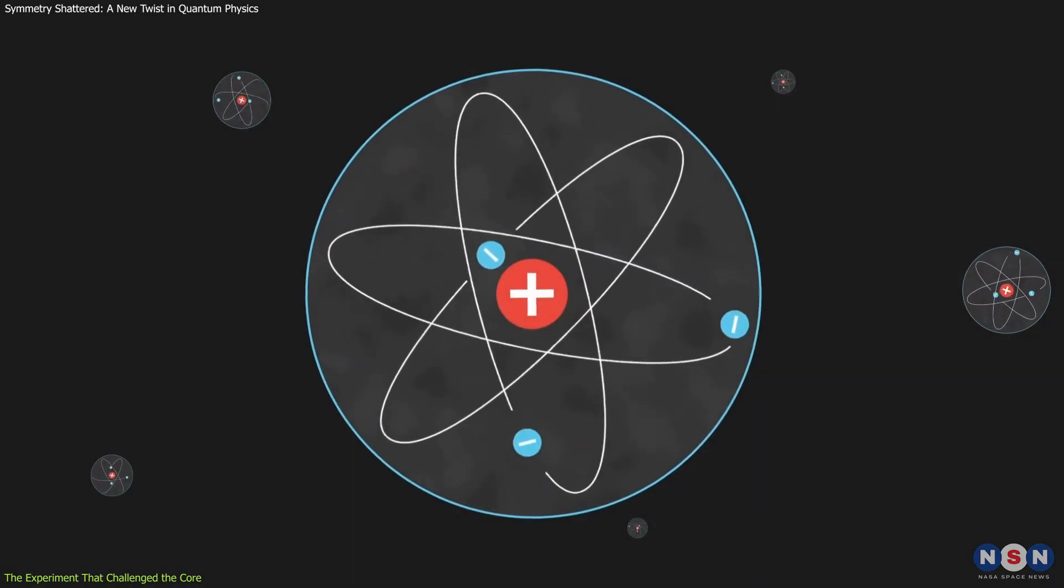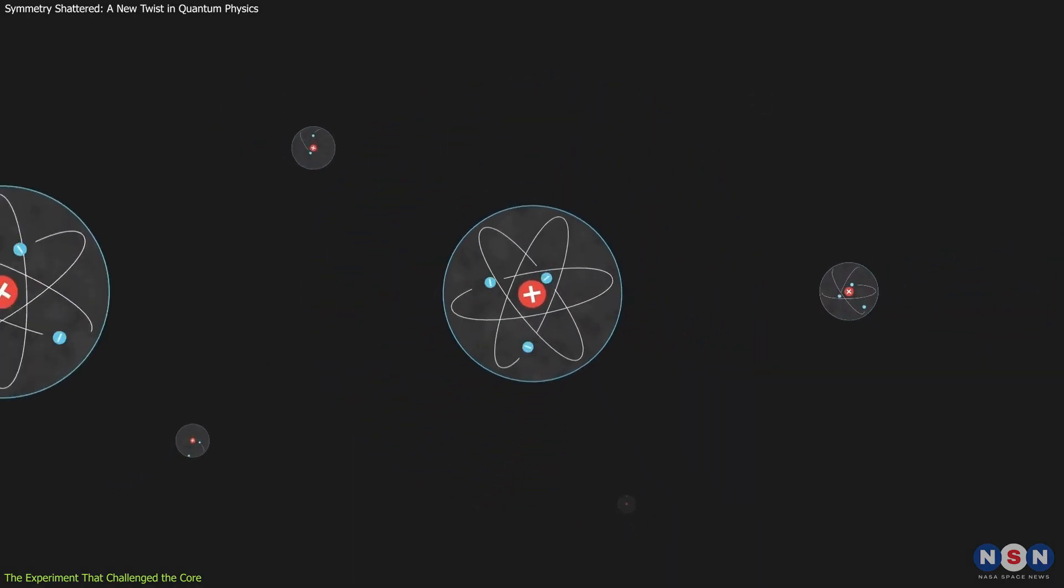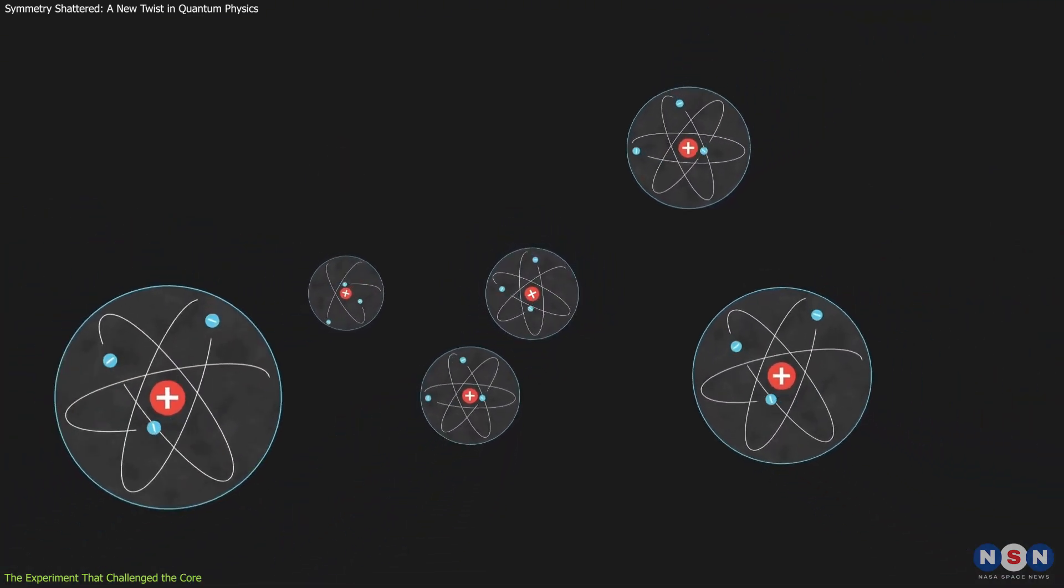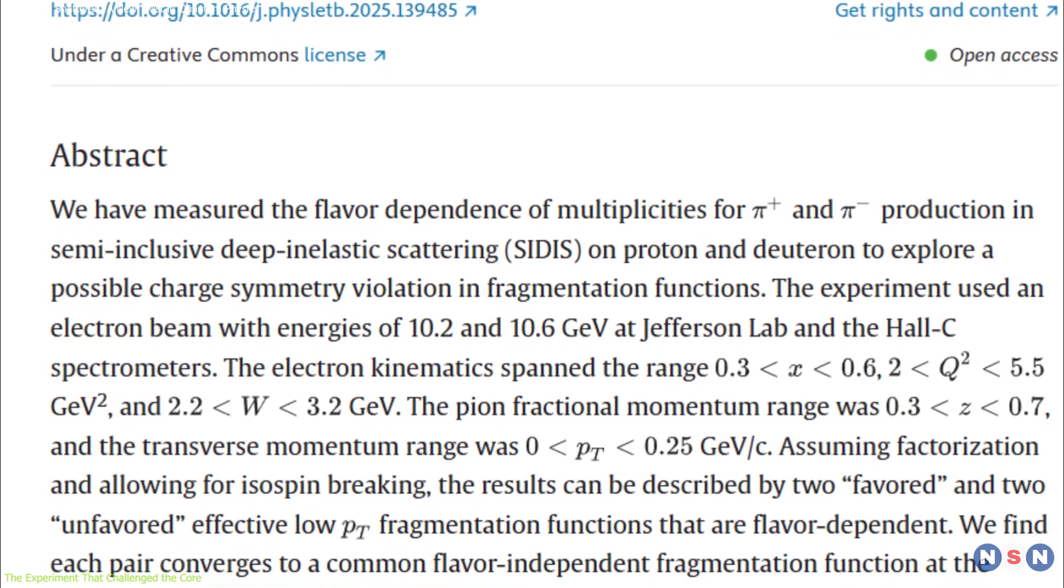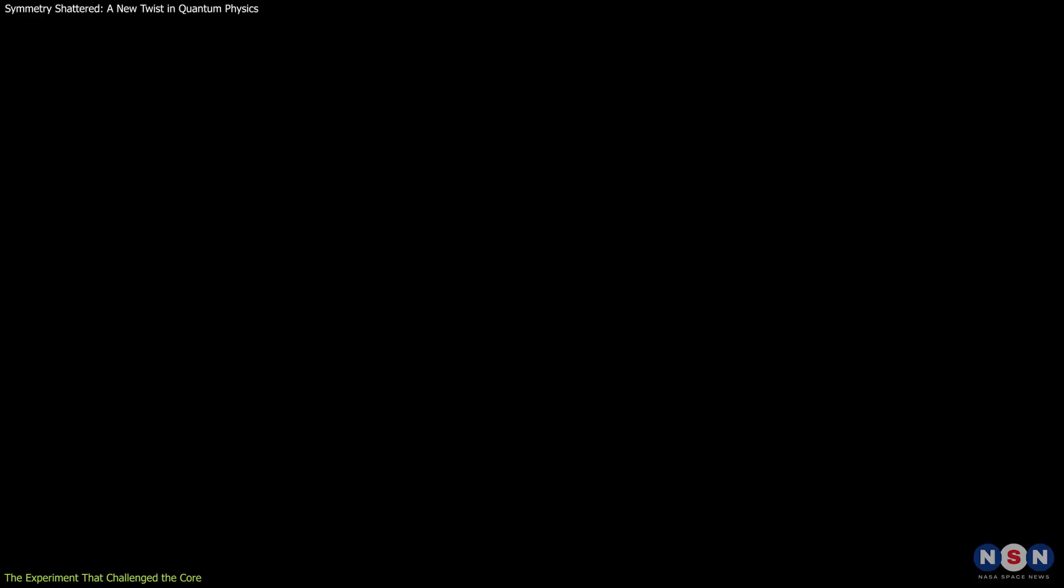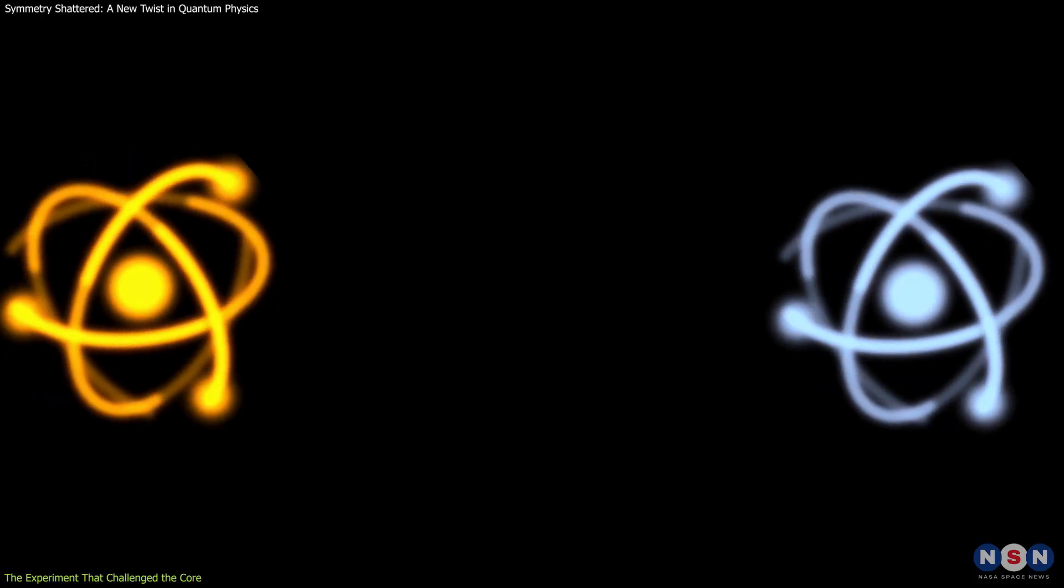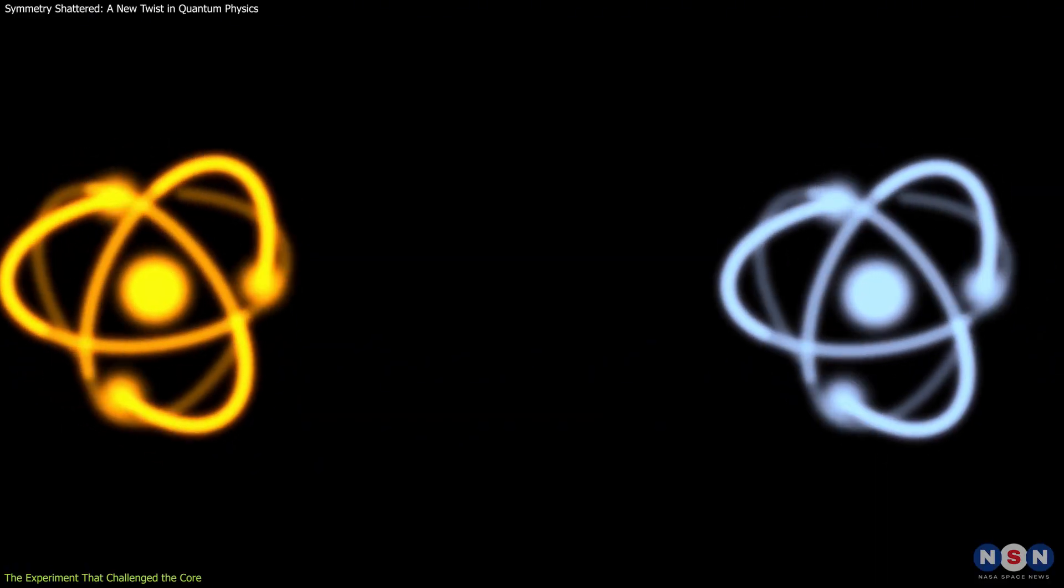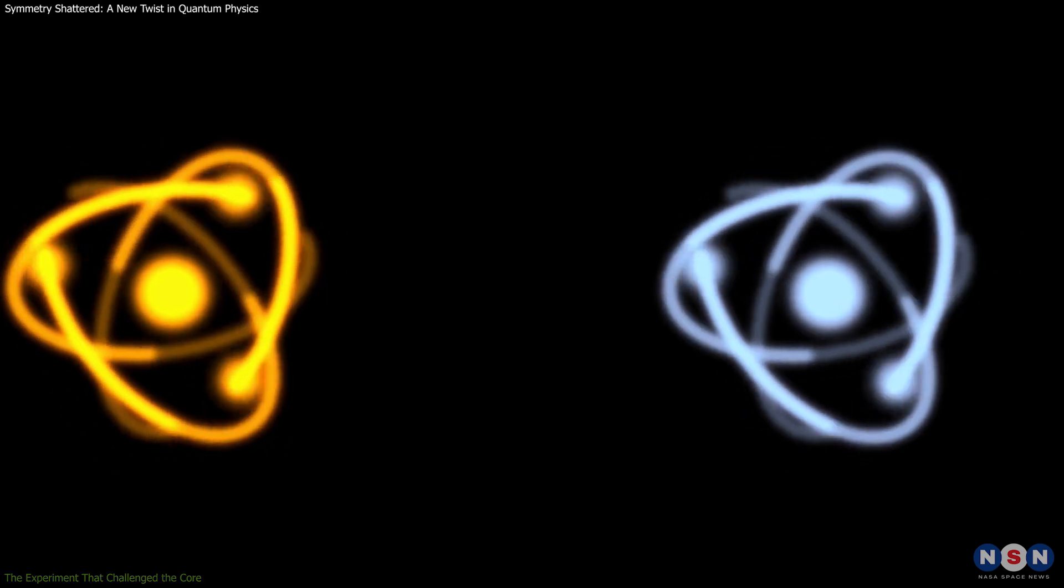These observations suggest that the long-assumed symmetry in quark behavior doesn't hold under all conditions. The findings challenge the conventional understanding that up and down quarks behave identically when their charges are flipped, a principle known as charge symmetry.